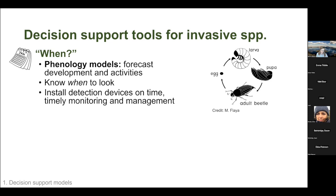If we can accurately model the progression through the life cycle, we can better understand when to look for a particular invasive species. We can install detection devices on time and implement monitoring activities at the right time. For established pests, certain life stages are more susceptible to insecticides, so targeting the specific life stage makes management more effective.